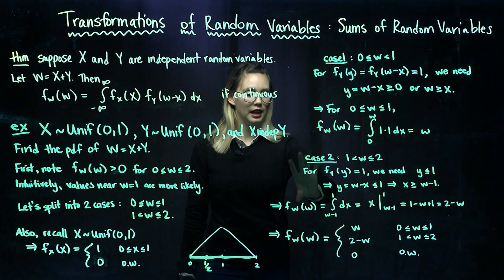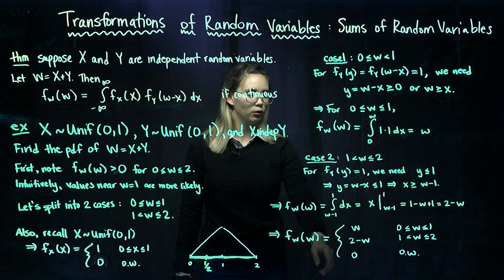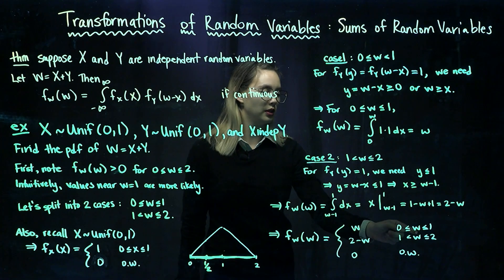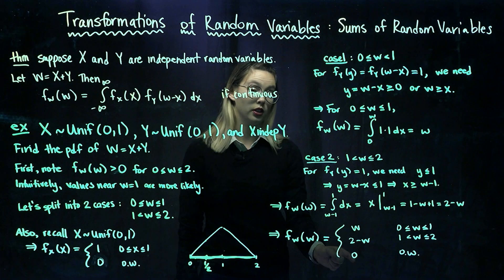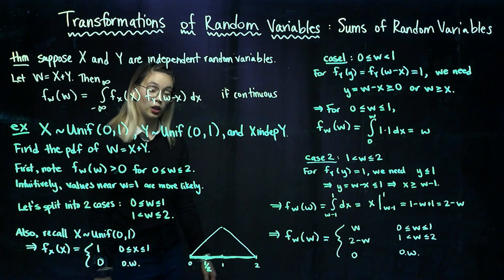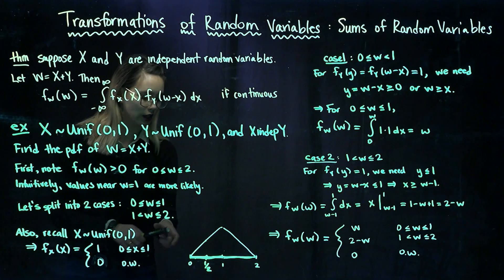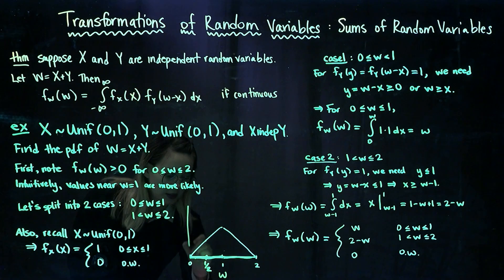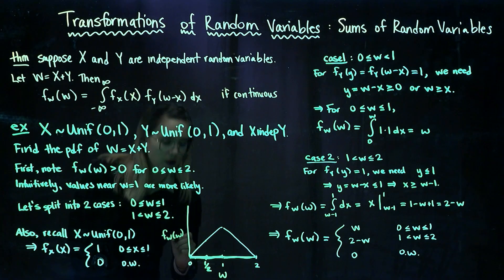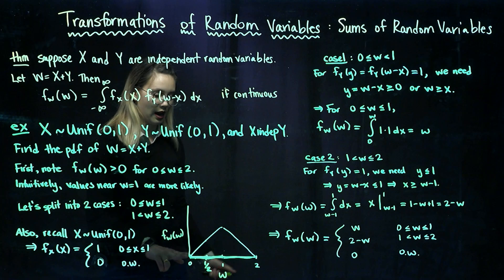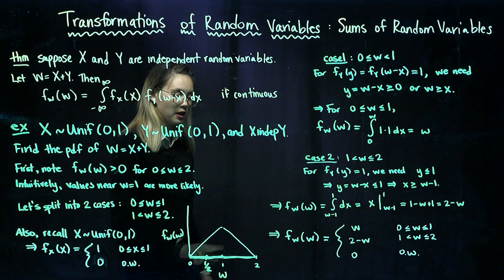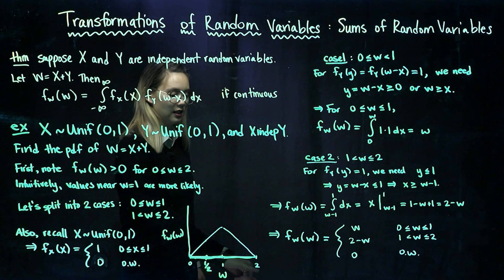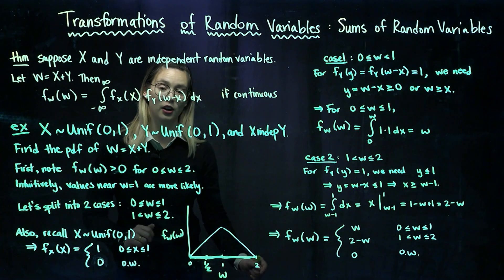So we've figured out both cases: the PDF for w equals w when w is between 0 and 1, equals 2 minus w when w is between 1 and 2, and equals 0 otherwise. If we draw a picture of this PDF, it looks like a triangle. On the w-axis, we have a line with slope 1 rising up to the point w equals 1, and then a line sloping downward with slope negative 1 until w equals 2, where the PDF returns to 0.